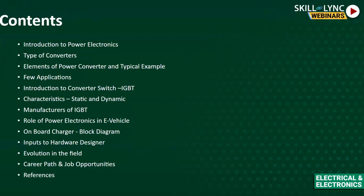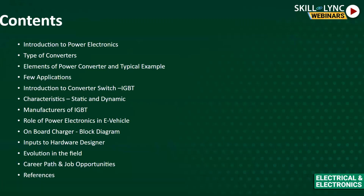We'll also see the introduction to the converter switch. In academics you might have come across diodes, thyristors, and GTOs, but in the industry we mainly use MOSFETs and IGBTs. Going forward, we are also now using silicon carbide and gallium nitride and many more wideband gap materials. We'll introduce the IGBT and see its static as well as dynamic characteristics, different manufacturers of the IGBT, and the role of power electronics in e-vehicles, including what type of converters are used - for example, the onboard charger.